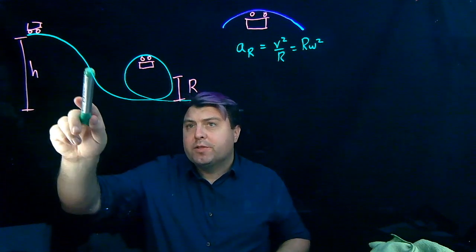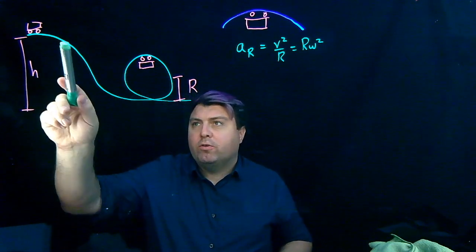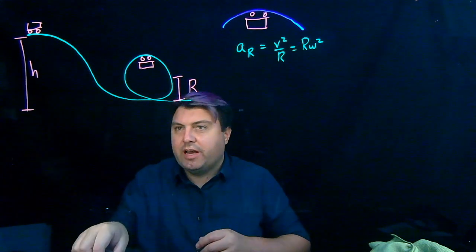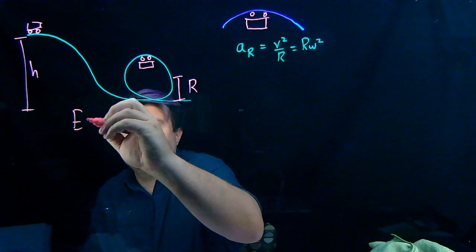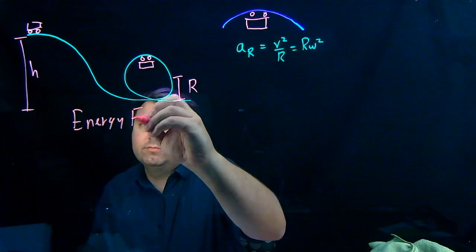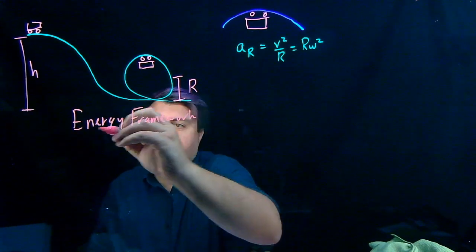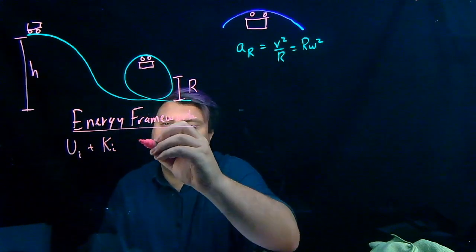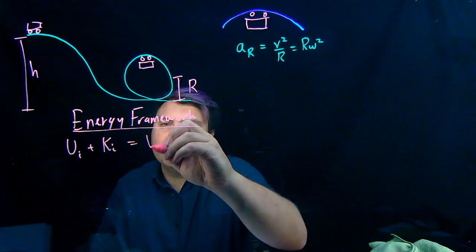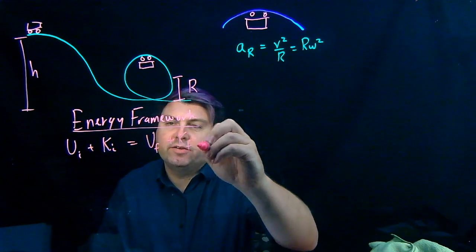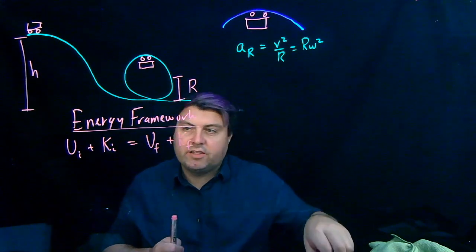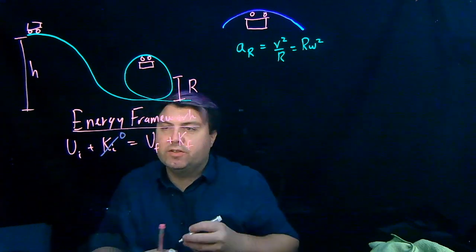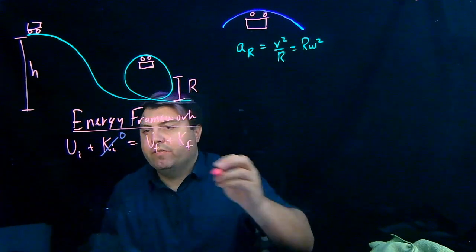Up at the top, we have a whole bunch of changing forces and changing accelerations, so we want to use an energy framework for most of this — talking about initial states versus final states. Our initial potential energy plus initial kinetic energy will equal our final potential energy plus final kinetic energy. We want the initial kinetic energy to start at zero.